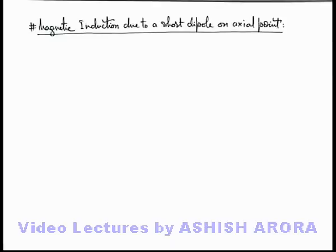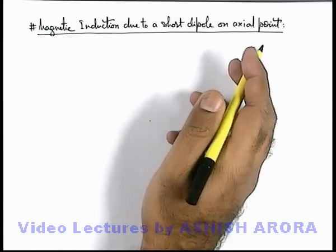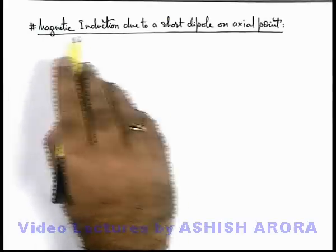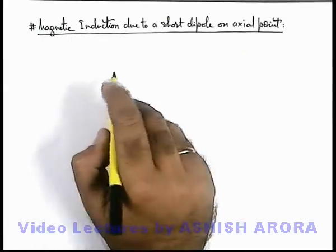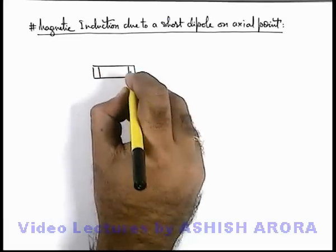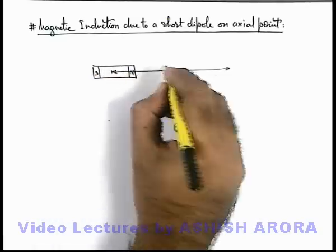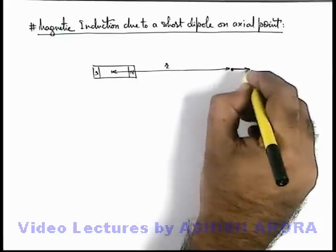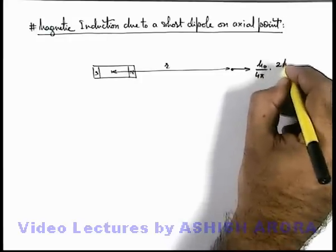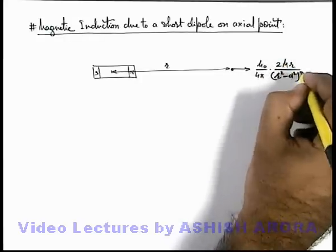As we have discussed about magnetic induction due to a bar magnet on the axial point, for a magnet at a distance r from the center, the magnetic induction is given by mu_0 over 4π multiplied by 2Mr by (r²-d²)².